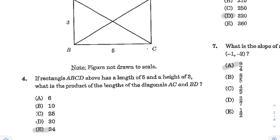For question number 4, you have a rectangle ABCD with a length of 5 and a height of 3. What is the product of the lengths of the diagonals AC and BD? What you want to find are the two diagonals, which are the same — the diagonals of a rectangle are always equal. To find the diagonals, you're going to use the Pythagorean theorem because a diagonal splits a rectangle into two right triangles, and for a rectangle all angles equal 90 degrees.